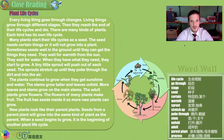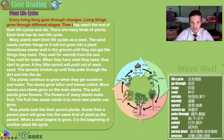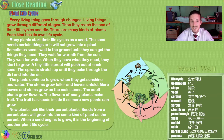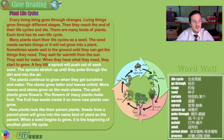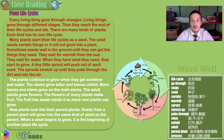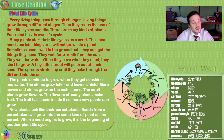Plant life cycles. Every living thing goes through changes. Living things grow through different stages, then they reach the end of their life cycles and die. There are many kinds of plants, and each kind has its own life cycle. Many plants start their life cycles as a seed. The seed needs certain things or it will not grow — warmth from the sun and water. When they have what they need, they start to grow, and a tiny sprout will push out of the seed and into the air.